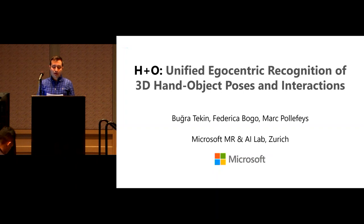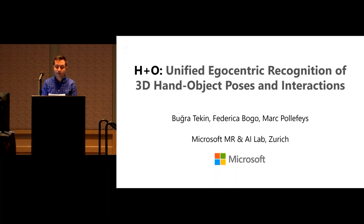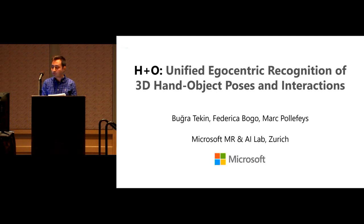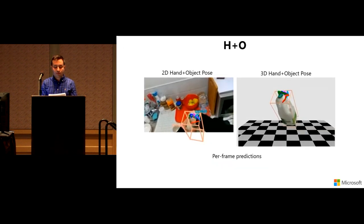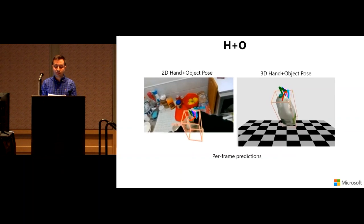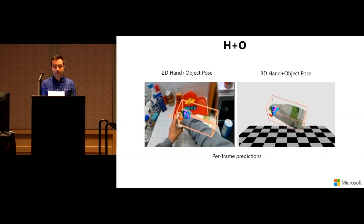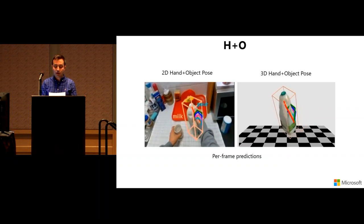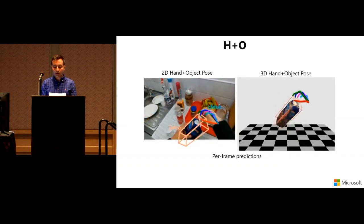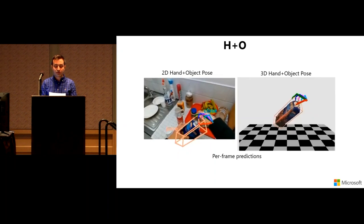I'm Burak Tekin presenting H+O: Unified Egocentric Recognition of 3D Hand-Object Poses and Interactions, from the Microsoft Mixed Reality and AI Lab in Zurich. We present a unified framework for understanding 3D hand-and-object interactions from RGB images. Our model jointly estimates 3D hand and object poses, models their interactions, and recognizes object and action classes with a single forward pass through a neural network.